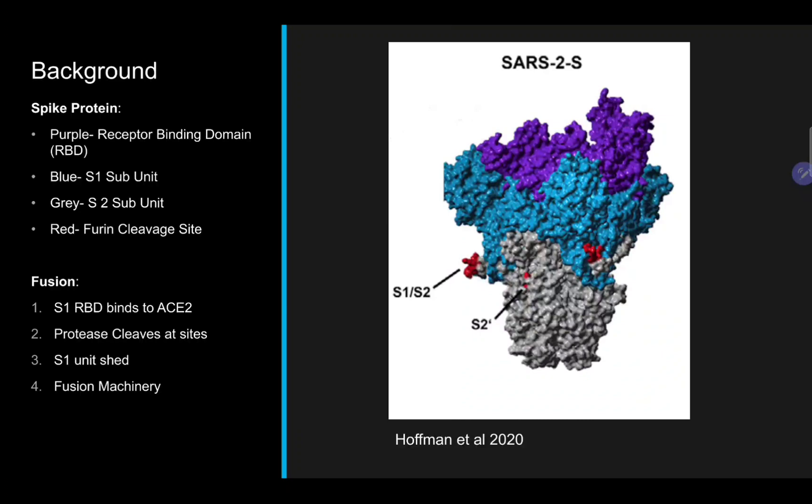Highlighted in red and marked by arrows are the vital cleavage sites. The S1-S2 site is our RRAR furin cleavage site, and what we'll be talking about today.